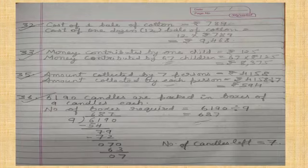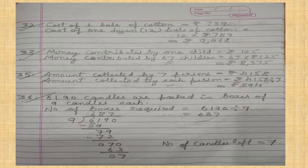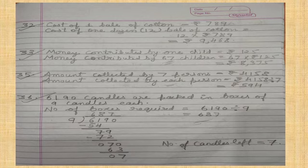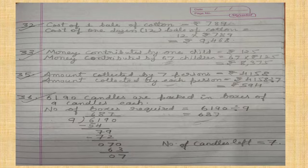Question thirty-two: One bale of cotton costs rupees seven hundred eighty-nine. How much will one dozen bales cost? One dozen means twelve, so you multiply by twelve. The step should be: cost of one bale of cotton equals rupees seven hundred eighty-nine, and cost of one dozen — meaning twelve bales — equals twelve into rupees seven hundred eighty-nine. The answer is nine thousand four hundred sixty-eight.